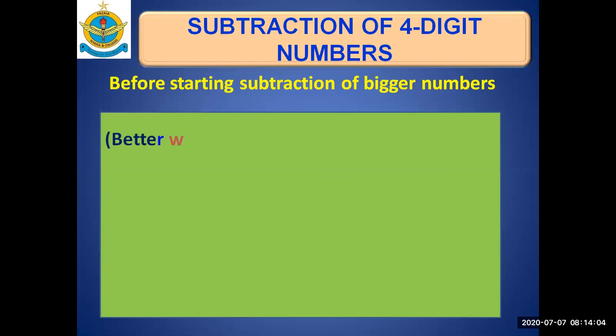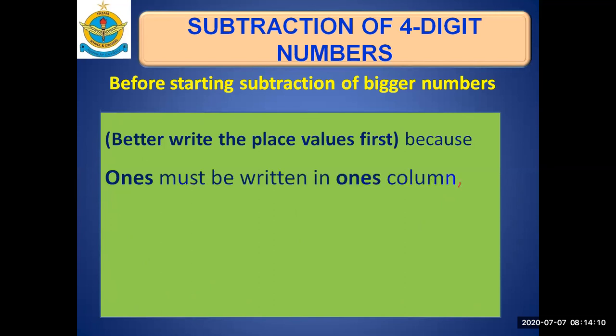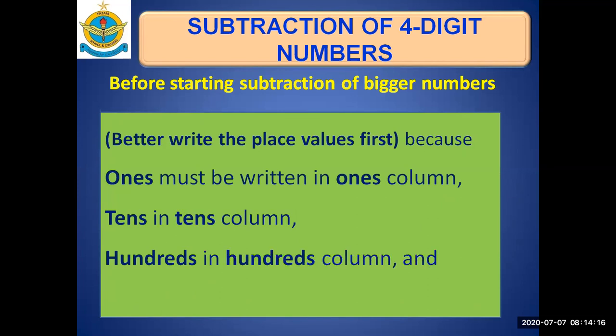Subtraction of four digit numbers. Before starting the subtraction of four digit numbers or bigger numbers, it's better to write the place values first because ones must be written in ones column, tens in tens column, hundreds in hundreds column, and thousands in thousands column. If you have written the numbers according to their columns, it will be easy for us to subtract them accordingly.